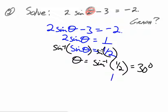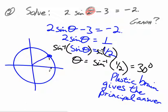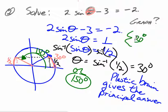Hopefully you didn't need a calculator for that. Unfortunately, that's just the principal answer. The plastic brain only knows the principal answer. You've got to be smart enough to realize that if you're looking for what angle puts you halfway up a unit circle Ferris wheel, there's another place where you're halfway up — over on the other side. So 30 degrees above on the left side would also be halfway up. That angle turns out to be 150 degrees. So there are two answers: 30 and 150.